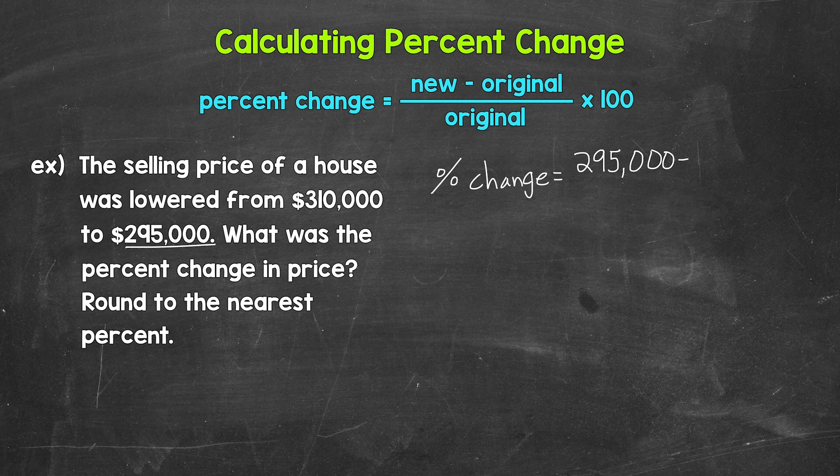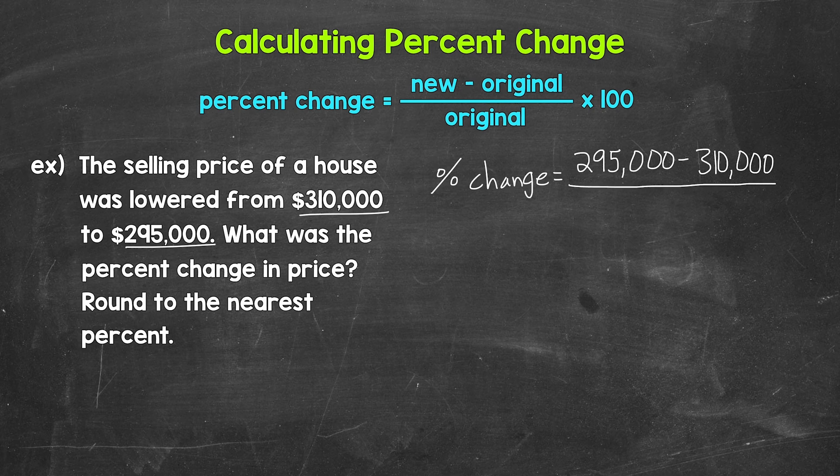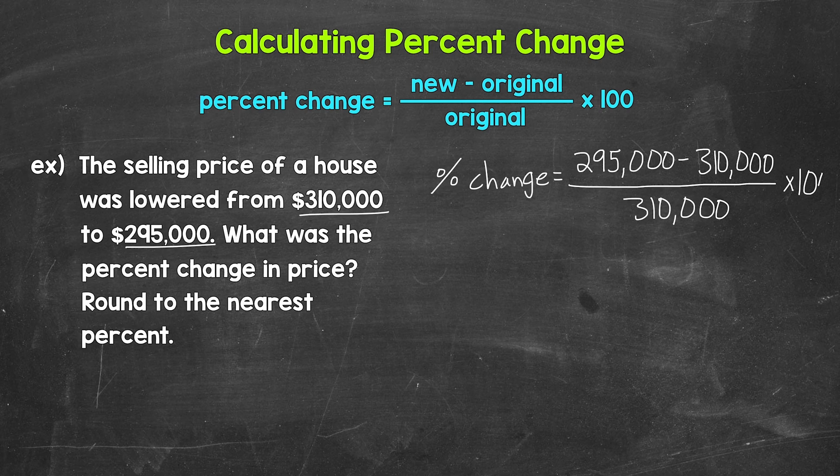So what was the price of the house to start with? Well, $310,000, so minus $310,000, and we divide that by the original value which again is $310,000, and then we multiply by 100. Now let's work through this.